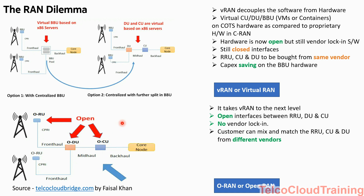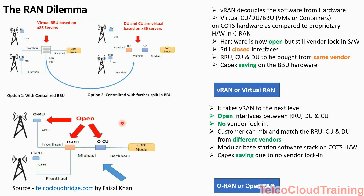With O-RAN, I can buy the RRU from Huawei, the DU from Ericsson, and the CU from Nokia — or from new players like Parallel Wireless, LTO Star, Mavenir, who have entered the Open RAN space aggressively. This is a modular base station software stack on COTS hardware. The CAPEX saving is due to no vendor lock-in — operators buy whatever is cheapest. However, system maintenance becomes complex because of different vendors, different accountabilities, different software, and initial interoperability issues.